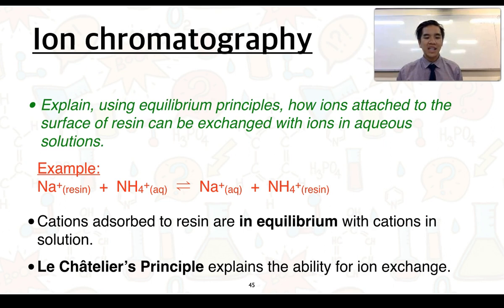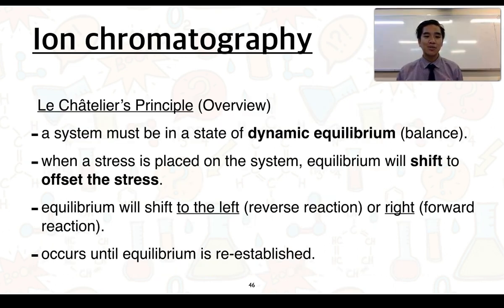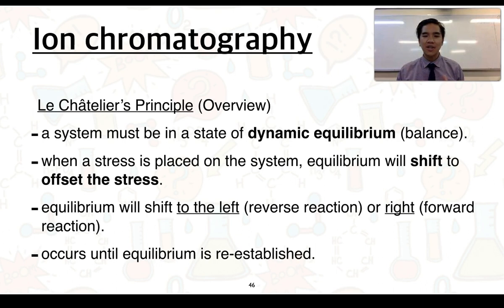We use what we call Le Chatelier's Principle to explain the ability for these ions to exchange places. In order for Le Chatelier's Principle to work, a system must be in a state of dynamic equilibrium, which is a state of balance. The word dynamic means that things are constantly happening, but overall there is no change — that's until we place a stress on the system. When we do, the equilibrium is going to shift to try and offset or counteract that stress, either to the left, favouring the reverse reaction, or to the right, favouring the forward reaction, until equilibrium is re-established.